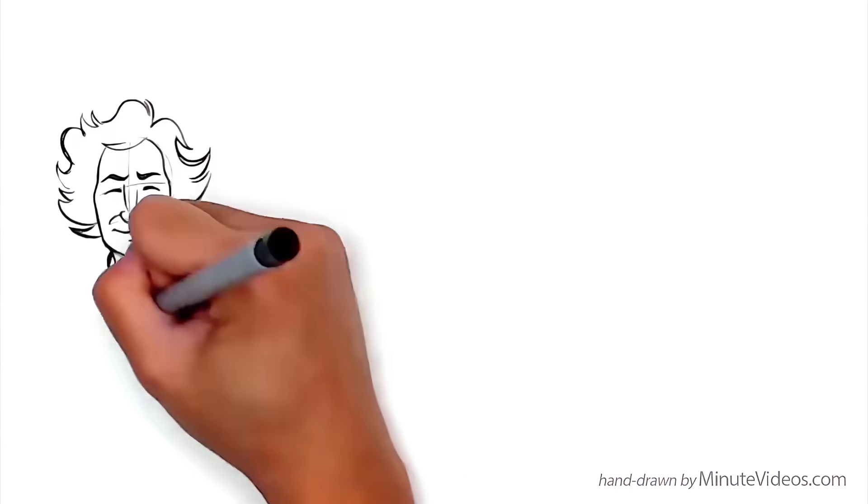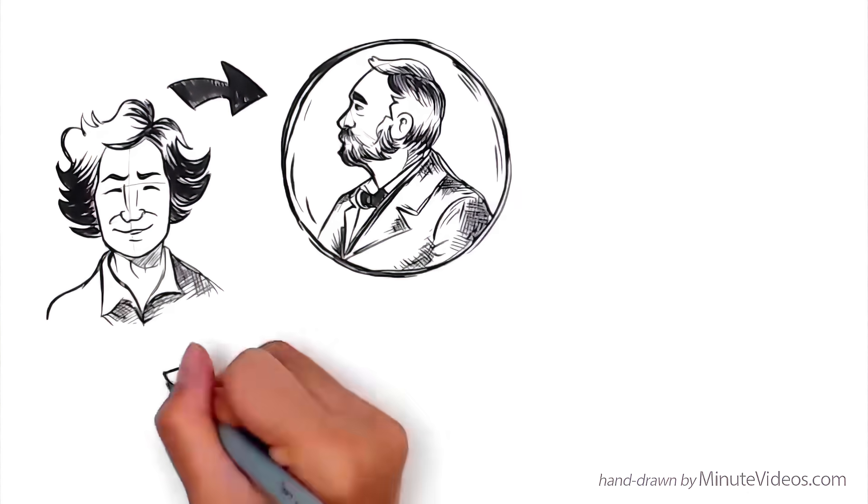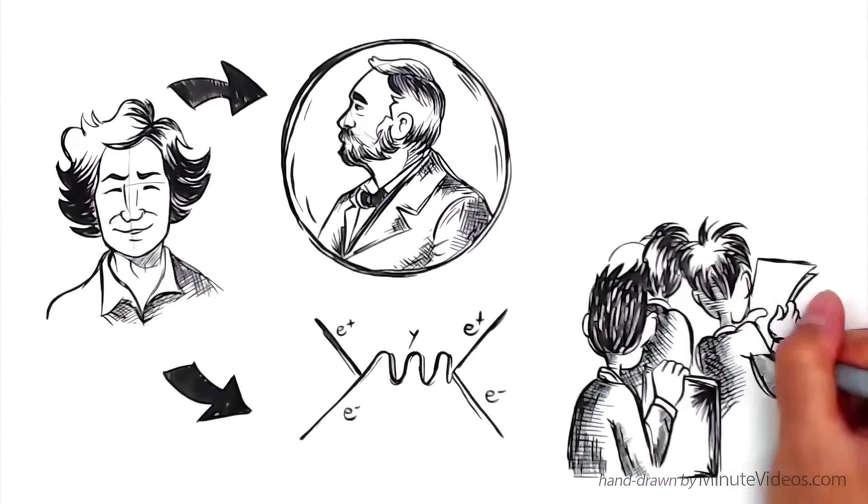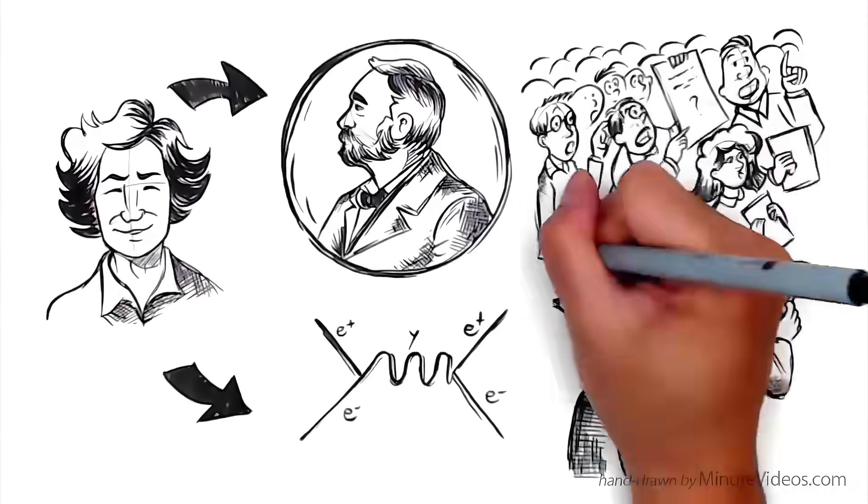Richard Feynman was a leading theoretical physicist who received a Nobel Prize for his work in quantum electrodynamics. He was notorious for asking his fellow mathematicians to explain concepts in simple language to test their understanding.